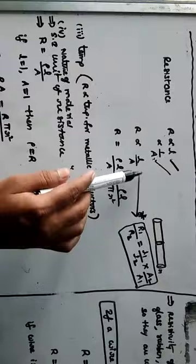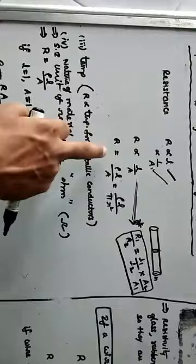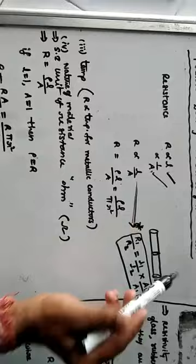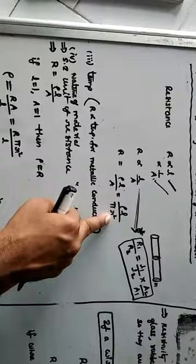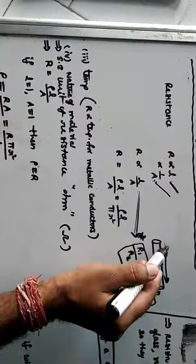Removing the proportionality symbol, we get R equal to rho L by area. The cross section is like a circle, so the area is pi R squared, where R is the radius of the circle and L is the length of the conductor.